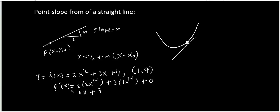The slope at the point 1 comma 9 will be m equals f prime 1, that is 4 times 1 plus 3, so that gives you 7.